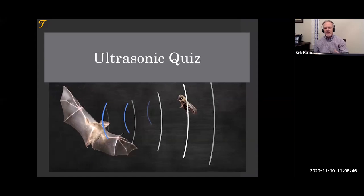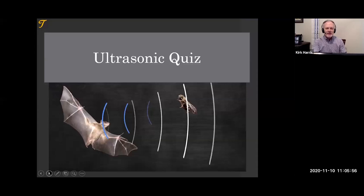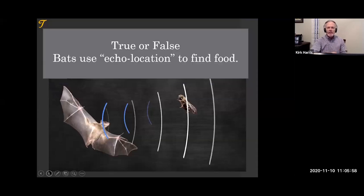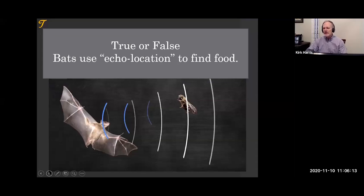When you look at the bat going after the moth or the insect, I'm going to ask you a few questions — I call this the ultrasonic quiz. Give me the answer that you think is correct. True or false: bats use what is called echolocation to find food. Is the correct term they use echolocation? This isn't the quiz, by the way, to get your certificate.